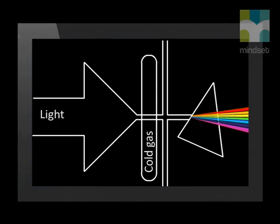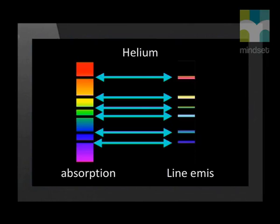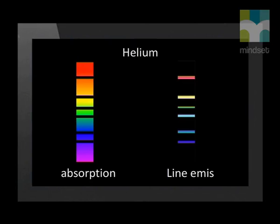The bright areas correspond to light which was transmitted through the gas. The dark lines correspond to light which the gas absorbed. Since the gas absorbed these colors, they are missing from the absorption spectrum. The colors missing in an absorption spectrum are the same as the colors present in that element's line emission spectrum. Why? Why should helium gas emit these colors when it is excited and absorb these same colors when it is cold?